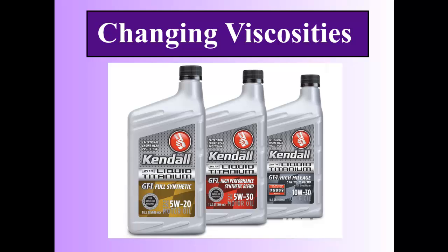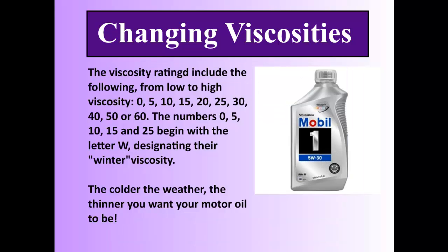Why do we have different types of oils — a 5W20, a 5W30, a 10W30? The viscosity rating on oil containers goes from low to high viscosity. Lower numbers mean low viscosity, higher numbers mean high viscosity. Numbers like 0, 5, 10, 15, and 25 have a letter W beside them, designating their winter viscosity. In the summertime, you can select an oil with a higher viscosity, like 20W30, because the heat of the car and the ambient heat from the hot summer will increase the particle spaces, increase fluidity, and the oil becomes less viscous on its own.